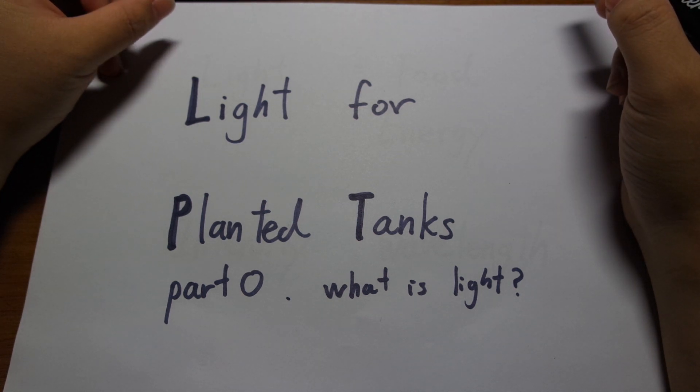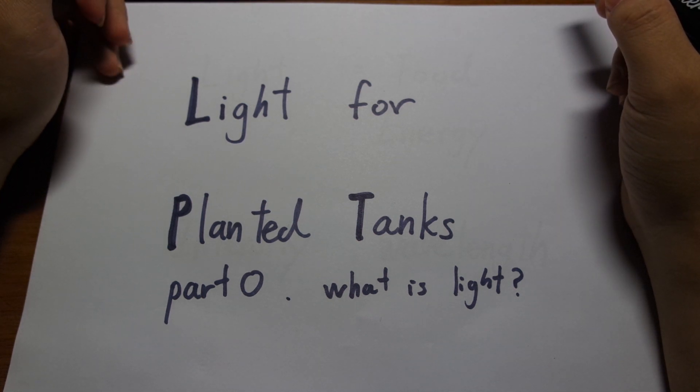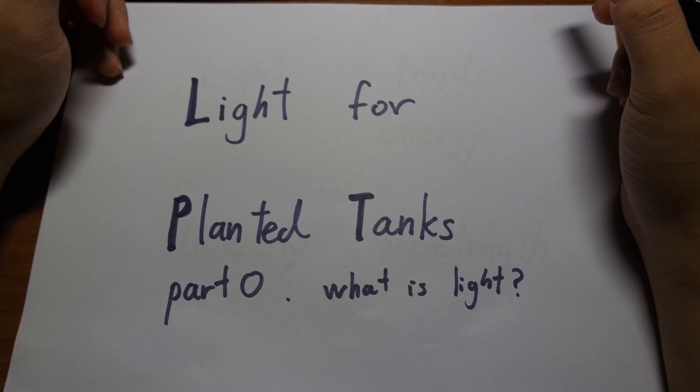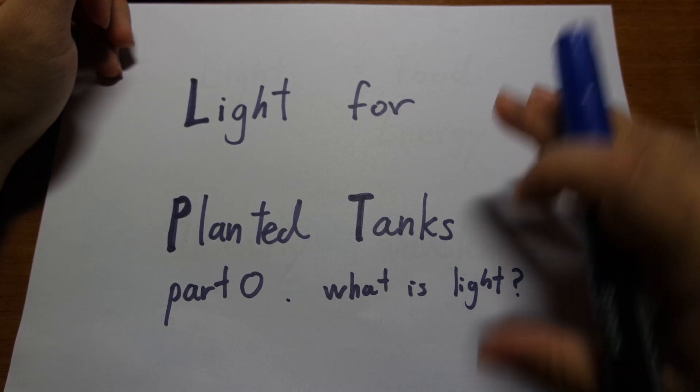And this is the first part. It's part 0 because I consider this part an optional part. In part 0, I'll be discussing just basic physics of light. So if you feel like you have a pretty firm grasp of high school level physics, then you can just skip this and go straight to part 1. I'll be discussing specific light bulb types. And if you want to know about the basic physics of light, then keep watching. So let's begin.